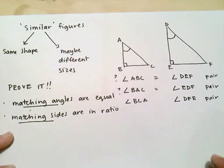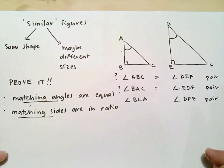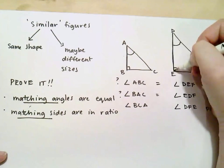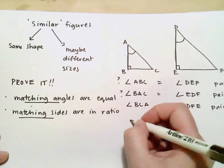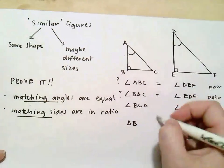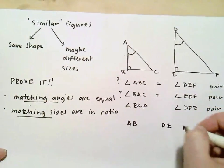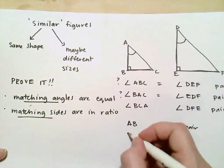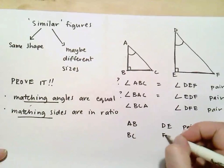The other one is that I can show that matching sides are in ratio. So what are my matching sides? Well this side matches with this side. So I'd say that side AB and DE are a pair.